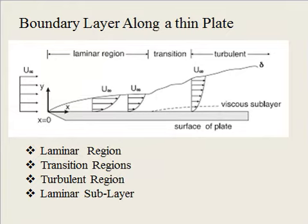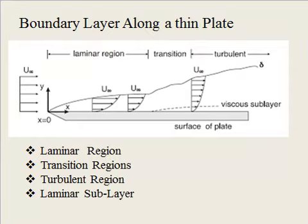In simple terms, whenever a fluid comes in contact with a surface there are two regions inside the fluid. One region is where there is an effect of viscosity — that is the boundary layer region, where velocity increases from zero at the surface up to 99 percent of the free stream velocity. Outside this region the velocity is almost constant, and that is the region outside the boundary layer. So there are always two regions existing whenever a flowing fluid comes in contact with any surface.